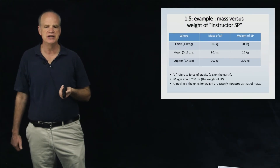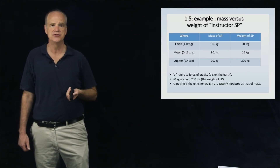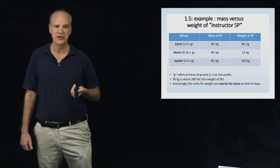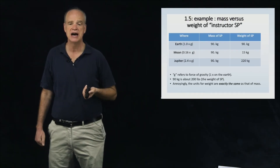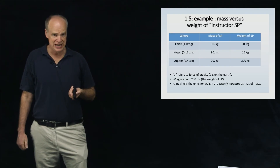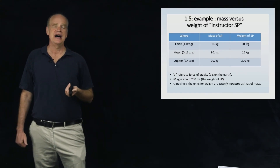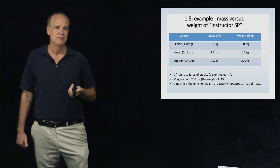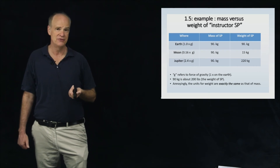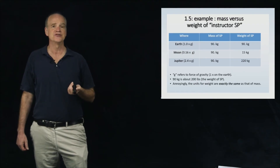Here's a personal example of the difference between mass and weight. I have a mass of 90 kilograms, which is about 200 pounds. That mass will always be 90 kilograms whether I'm on Earth, the moon, or Jupiter. But my weight changes: on Earth it's 90 kilograms, on the moon it drops to only 15 kilograms, and on Jupiter — which has about 2.4 times more gravity — it would be 220 kilograms.